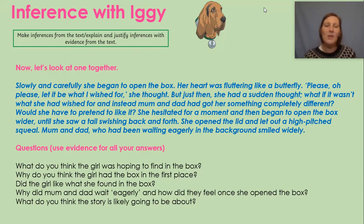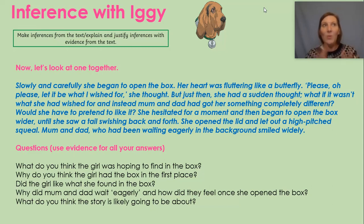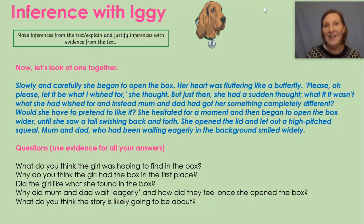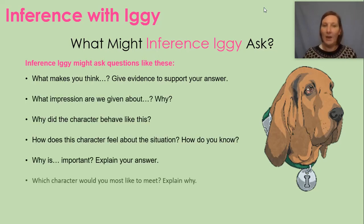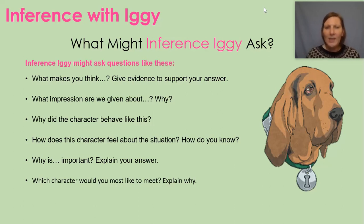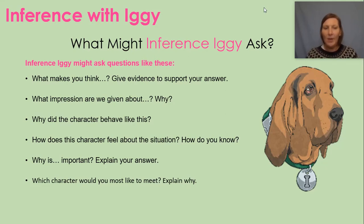What do you think the story is likely to be about? I think it's going to be about the little girl and her new puppy — all the wonderful things they're going to get up to and the new tricks she's going to teach the puppy. Now, Iggy might ask things like: what makes you think that? Give evidence to support your answer. What impressions are given about a character? Why did the character behave like this? How does the character feel about this situation — how do you know? Why is something important? Explain your answer. And which character would you most like to meet and why?